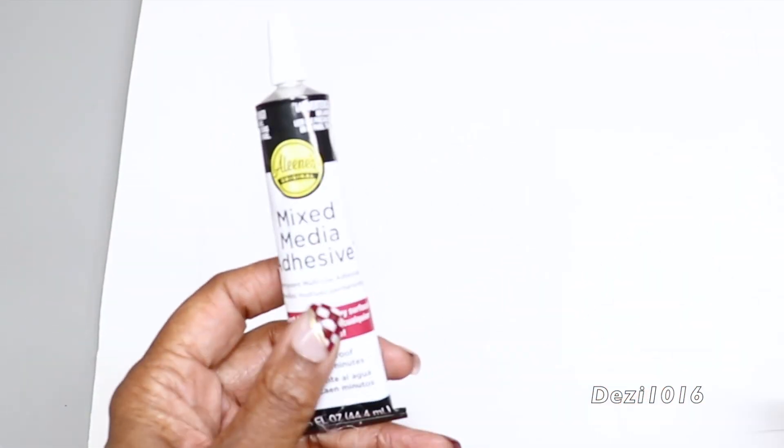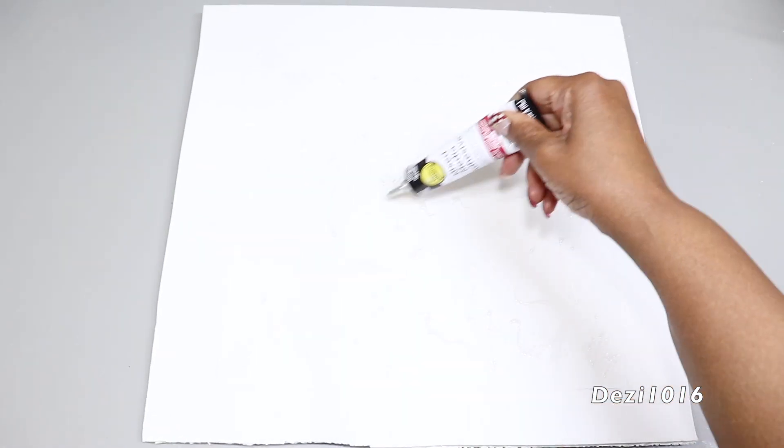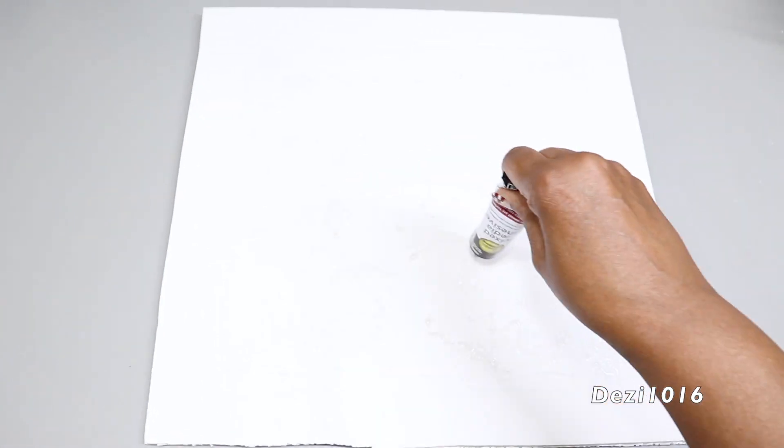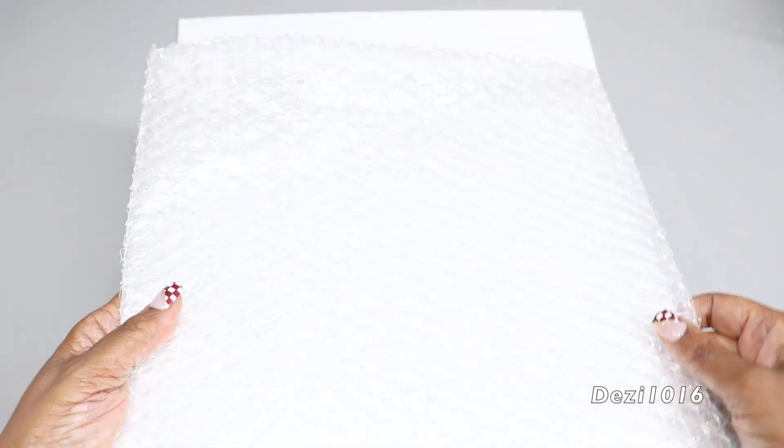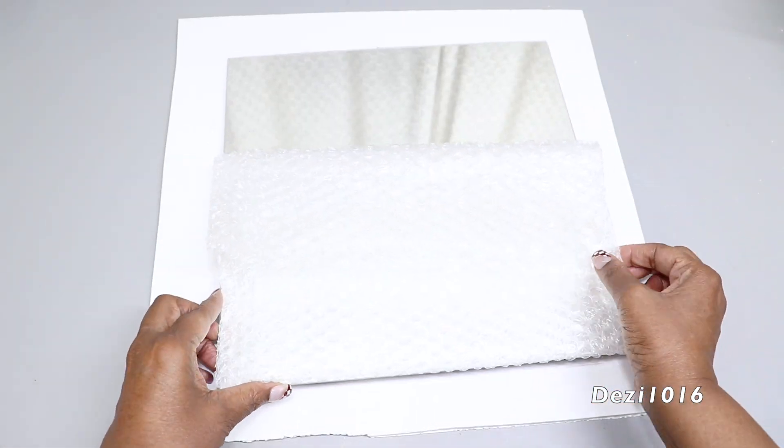Now using my Aileen's mixed media adhesive, I'm going to apply that in the center where I drew the line. I'm going to make sure I get the adhesive along the edges so that the mirror can be nice and secure and stay in place. Now I'm going to apply the mirror, and I covered it up so that there won't be any flashback.